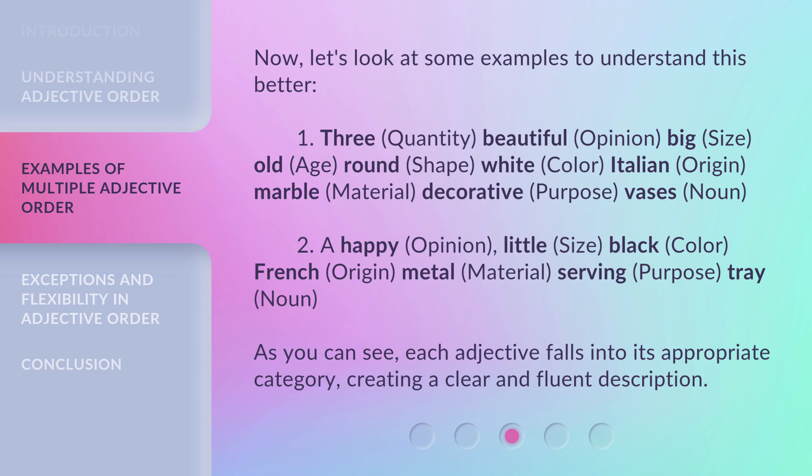Example 2: A happy (opinion), little (size), black (color), French (origin), metal (material), serving (purpose) — tray (noun).